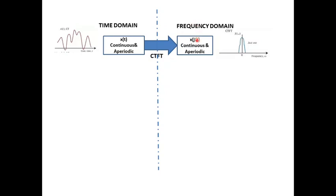We get the signal X(jω). Please remember that both signals are the same but represented in two different domains. X(jω) is the Fourier transform of x(t), and the Fourier transform of this signal will look like a single pulse where the entire information is represented. This is Continuous Time Fourier Transform, and the nature of this signal is continuous time and aperiodic. Our ultimate aim is to convert the continuous time signal into a digital signal.